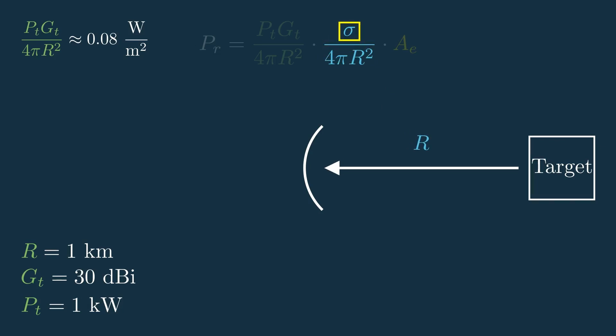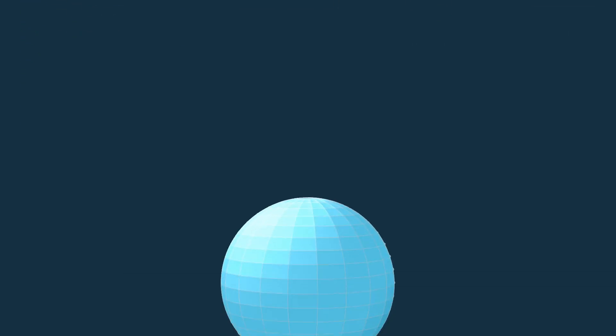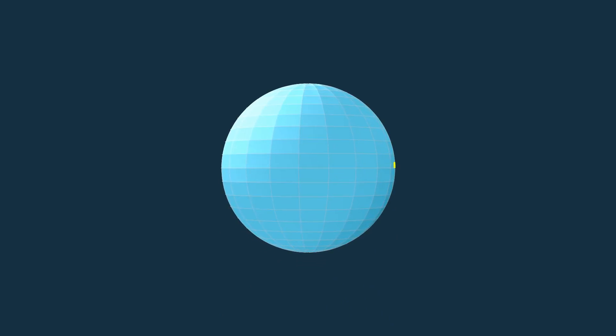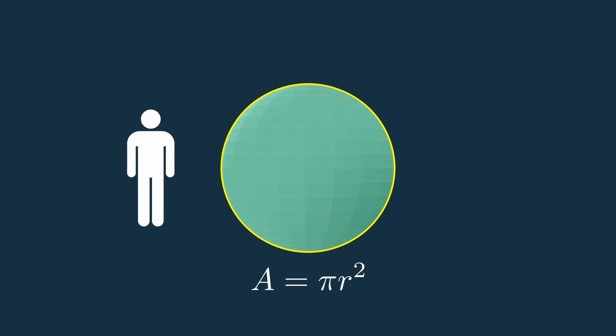But there's also this sigma term, or the radar cross section, which is measured in meters squared or just another area, and this is basically how the radar sees a target. So for example, if your radar was looking head on at a sphere, the sphere would just look like a circle, right? So the radar cross section would just be the area of that circle, or π r squared. Now if the target was a human on the other hand, the radar would see a silhouette of a human, which I'm pretty sure has a much more complicated equation.